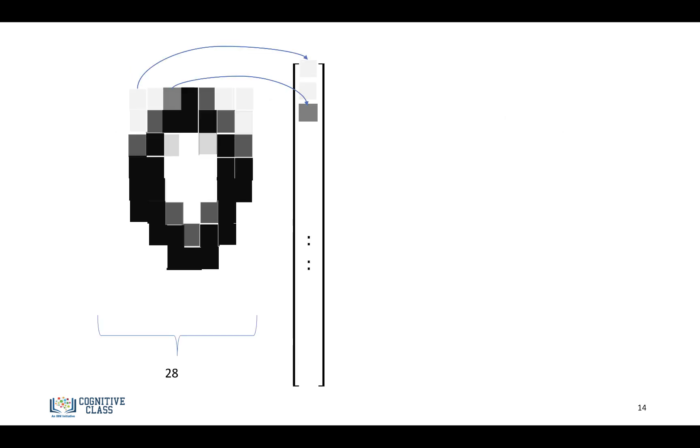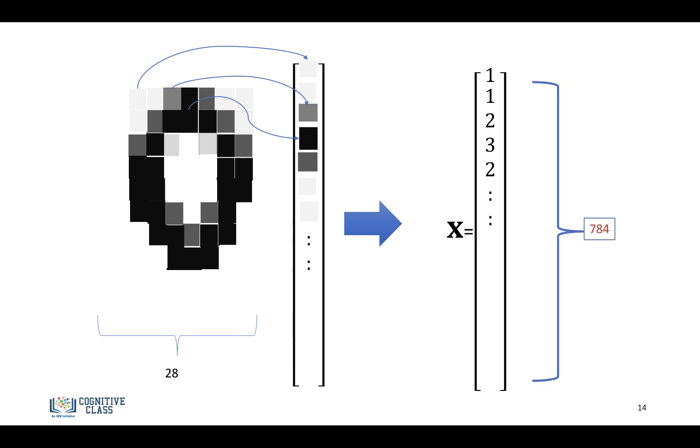We still have to convert our MNIST dataset to a 1D tensor, or vector, with 784 dimensions.